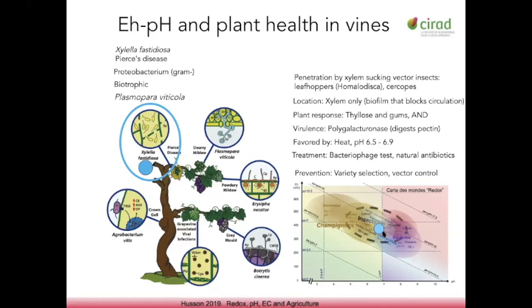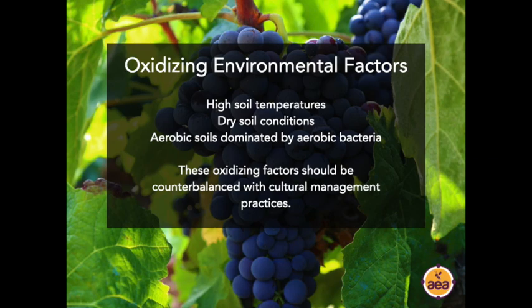In general, the very high-level perspective is that each of these vascular infections expresses itself when plants are grown in excessively oxidized environments. Environmental factors which have an oxidizing effect include high soil temperatures, dry soil conditions, soils that are very aerobic with almost excessive levels of gas exchange, and soils dominated by aerobic bacteria. These aerobic bacteria can also be termed oxidizing bacteria or nitrifying bacteria, because they convert ammonium to nitrate — from the reduced to the oxidized state. Those are different terminologies all describing exactly the same thing.